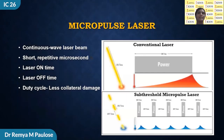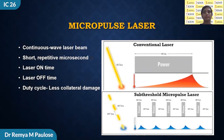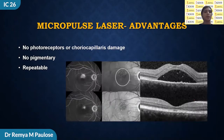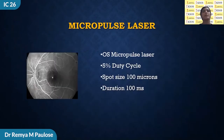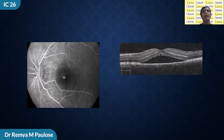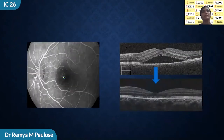Micropulse laser uses a continuous wave laser beam that is chopped into short repetitive microsecond pulses. Laser on-time is the duration of each micropulse and the off-time is the time between the micropulses; the ratio between on-time and off-time is known as the duty cycle. Eyes treated with micropulse laser do not exhibit damage to the photoreceptors and thus do not produce much pigmentary changes, avoiding scotoma, calibration loss, and loss of contrast sensitivity. Due to the safety of micropulse, it can be repeated without limit. This patient was subjected to micropulse laser in the left eye with 5% duty cycle, spot size of 100 microns, and responded with complete resolution of subretinal fluid.